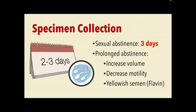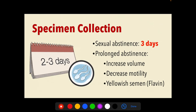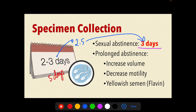To properly collect the semen sample, there must be a period of sexual abstinence — approximately three days according to Henry's 22nd edition, or two to three days but not more than five days according to Strassinger. Longer periods of abstinence usually result in higher semen volume but reduced sperm motility. In such cases, a second semen specimen may be collected two hours after the first sample.